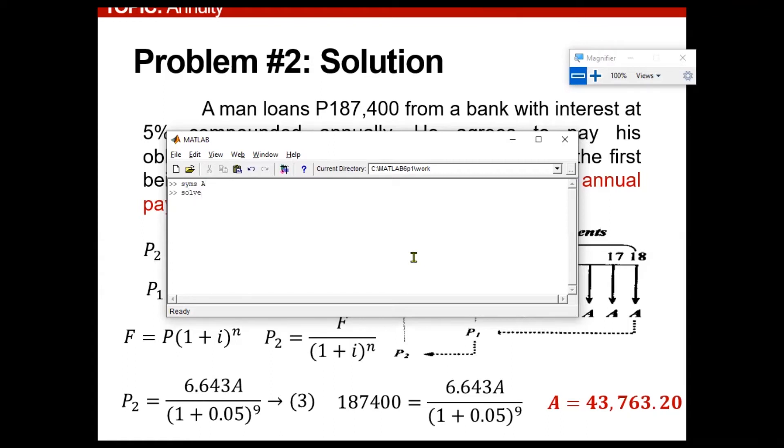Then the syntax, as you already know, in this version is solved. Let us input the following equations, wherein 187,400 is equivalent to 6.643 multiplied by A divided by 1 plus 0.05 raised to 9. Press enter. Of course, we will arrive at an exact answer. So this is 43,763, same as our problem.